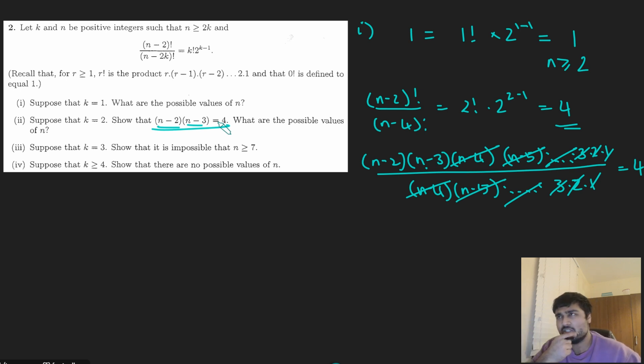In particular, if they're consecutive integers, well, then one of them must be odd. I don't know which, but one of them must be odd. But what are the odd factors of 4? The only options are 1 or minus 1.